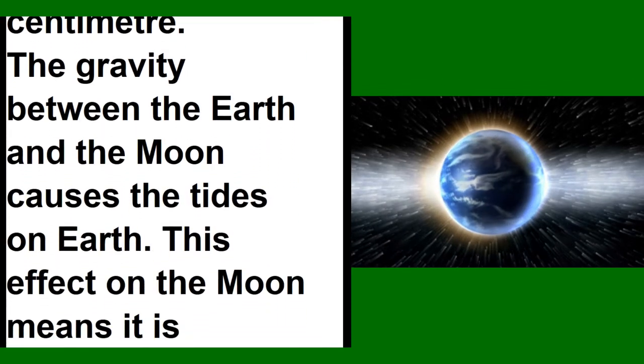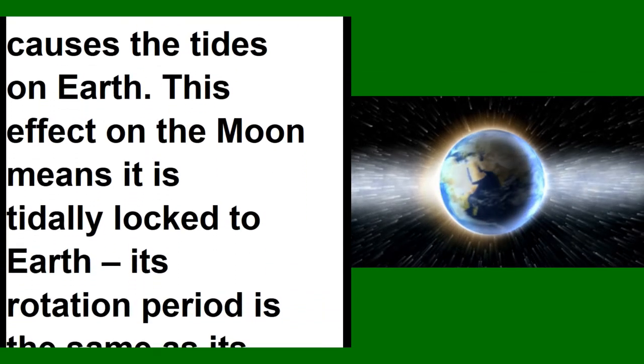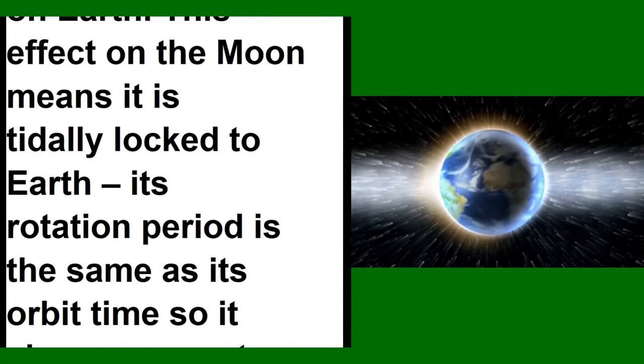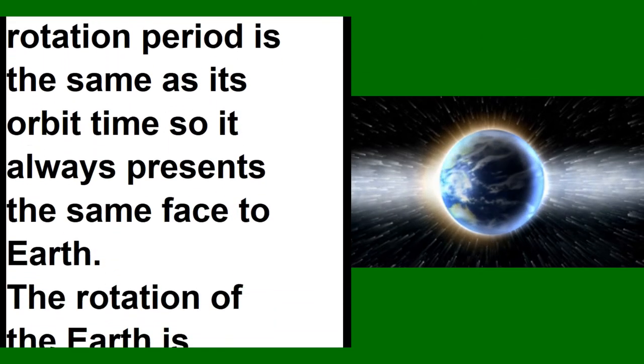The gravity between Earth and the Moon causes tides on Earth. This effect means the Moon is tidally locked to Earth. Its rotation period is the same as its orbit time, so it always presents the same face to Earth.